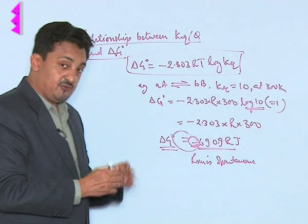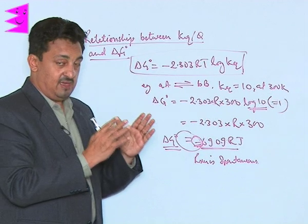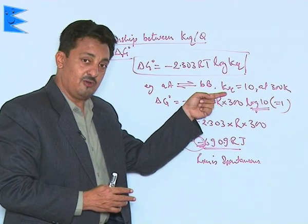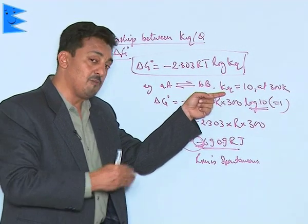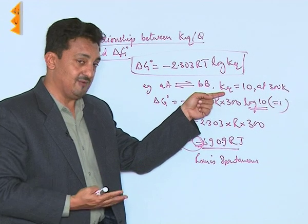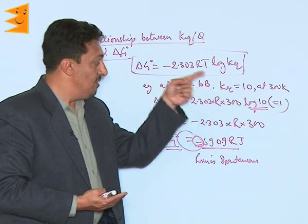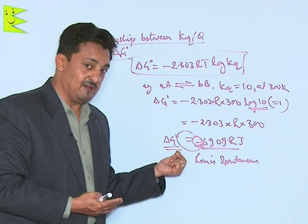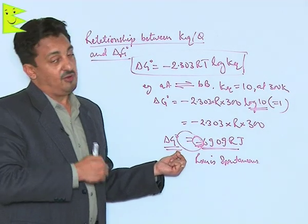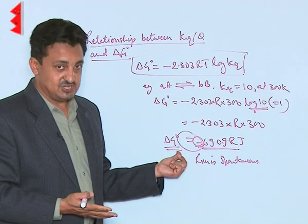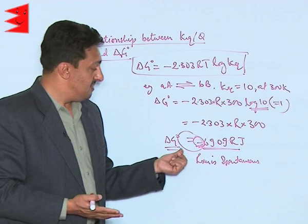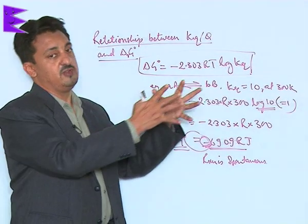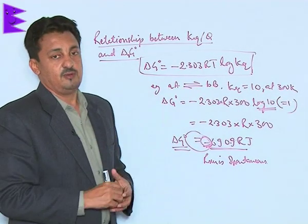An important point: the larger the value of the equilibrium constant, the more positive it is, the more negative the standard free energy will become. And the more negative the value of delta G°, the more spontaneous the reaction is, and the faster it moves towards the product side.